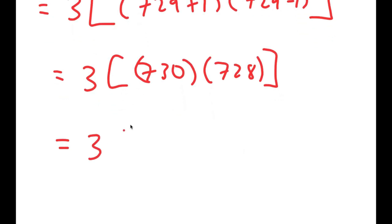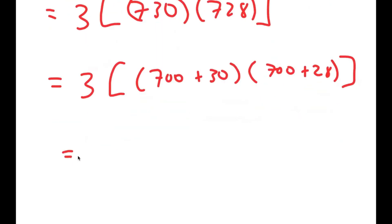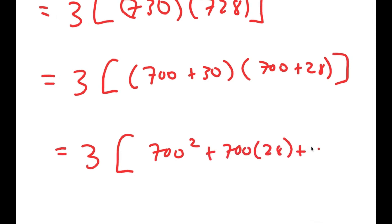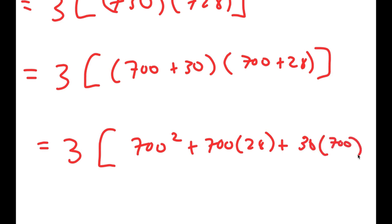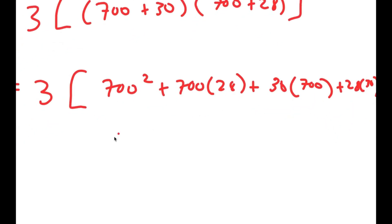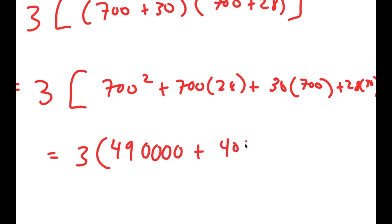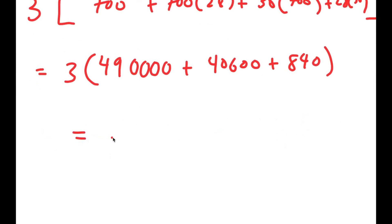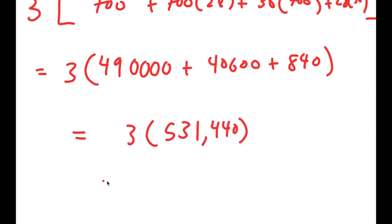From here I'm going to rewrite this as 700 plus 30 times 700 plus 28. This is equal to 3 times 490,000 plus 40,000. So this is equal to 3 times 531,440 plus 840, which is equal to 1,594,320. So this is my answer.